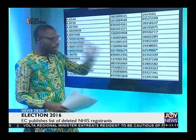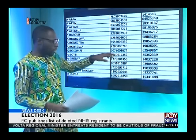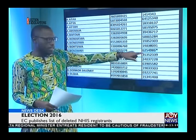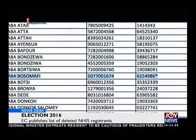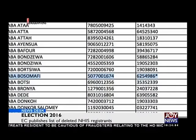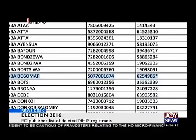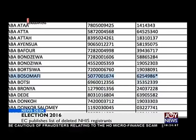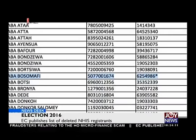In this instance, clearly as you can see, for the National Health Insurance Card displayed here, it comes with 625-4986, and the very last digit is an asterisk. As to how we are able to identify the person with this asterisk is also a bit problematic.